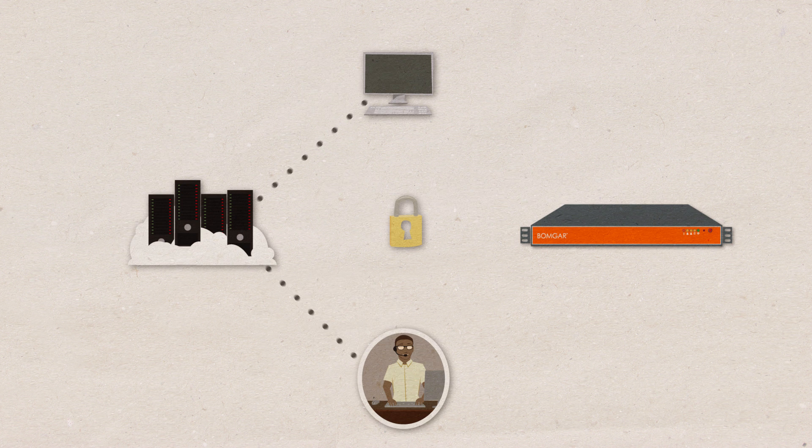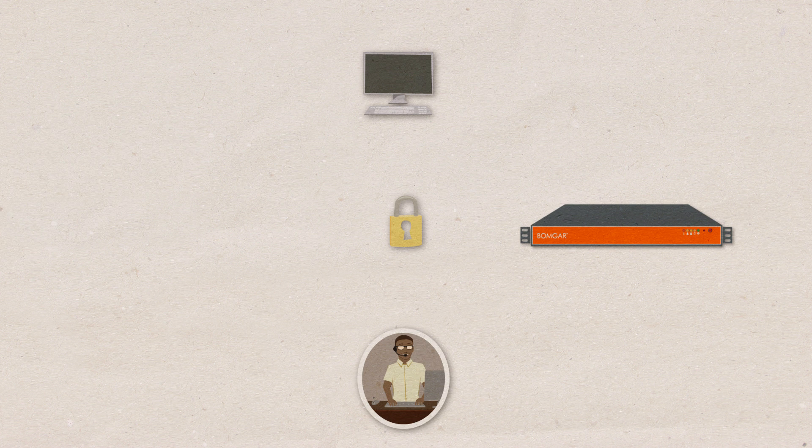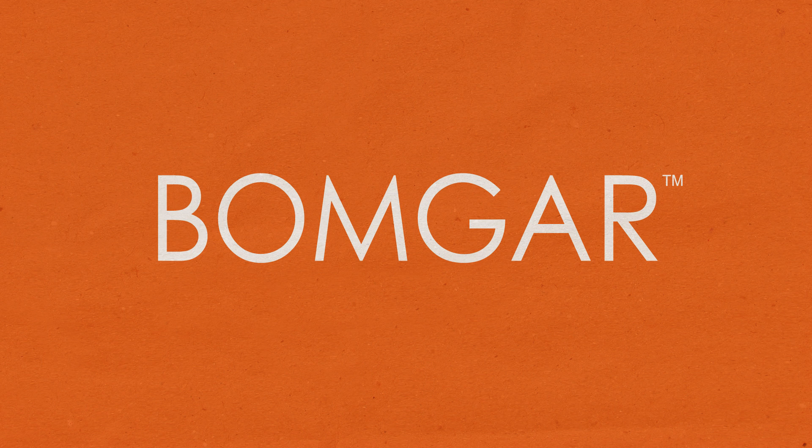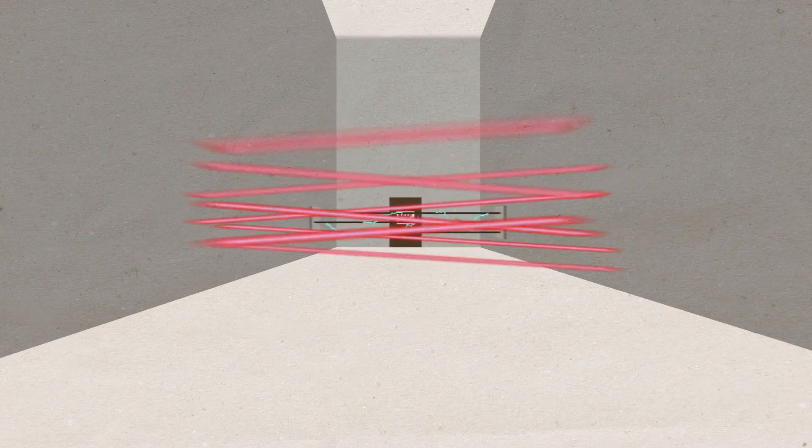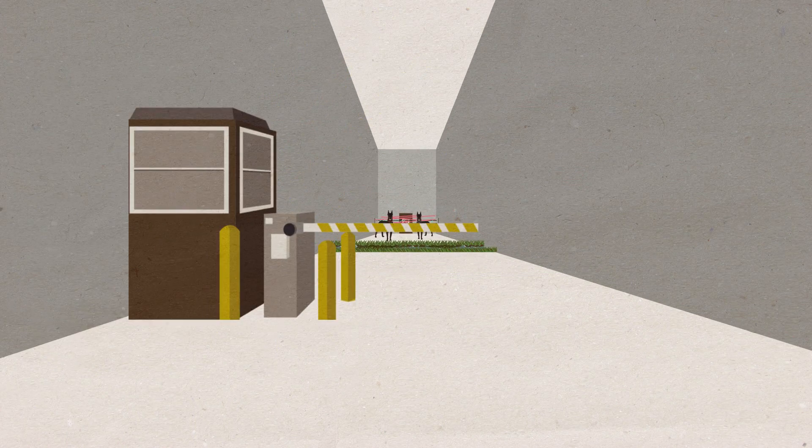SaaS remote access tools route your sensitive data through third-party servers. That means you're liable for systems you don't control. But with BOMGAR, you don't have to trust someone else to guard your data. BOMGAR routes all your sensitive data through an appliance behind your firewall under the security measures you already have in place.